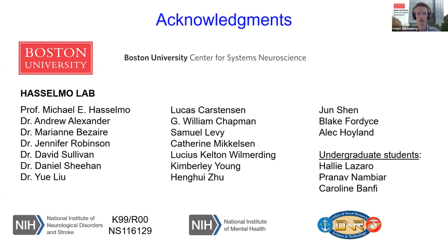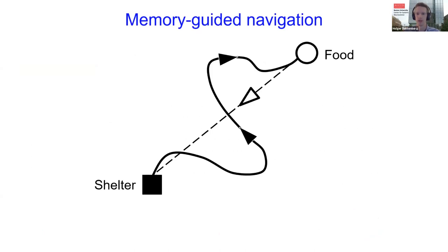Let me start with a simple thought experiment. Imagine an animal foraging in an environment searching for food. Once the animal has found food, it often wants to return to its shelter to consume it in a safe location, and it can do so by taking the fastest route possible, even if it has never taken that route before. A key question is how internal self-motion cues are integrated with external sensory cues.